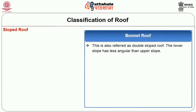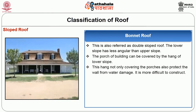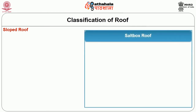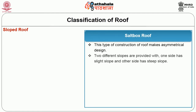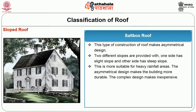Bonnet roof, also referred to as a double-sloped roof, has a lower slope with less angle than the upper slope. The porch of the building can be covered by the overhang of the lower slope, which not only covers the porches but also protects the wall from water damage. It is more difficult to construct. Salt box roof makes an asymmetrical design with two different slopes — one side has a shallow slope and the other a steep slope. It is more suitable for heavy rainfall areas and the asymmetrical design makes the building more durable, though the complex design is expensive.